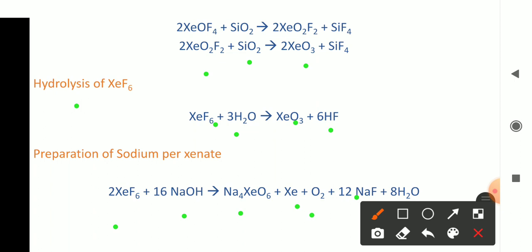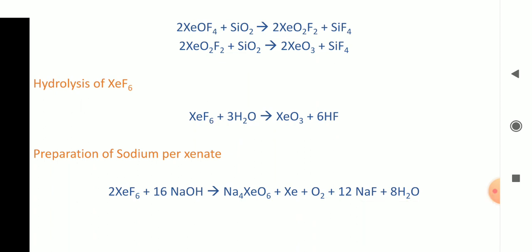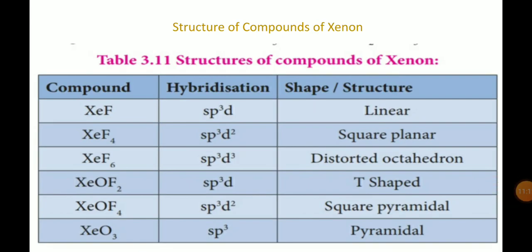In this video, we have seen four chemical properties: first, preparation of xenon fluorides; second, preparation of xenon oxyfluoride (XeOF₄); third, hydrolysis of XeF₆; and finally, preparation of sodium perxenate. Now let us discuss the structures of certain compounds of xenon.